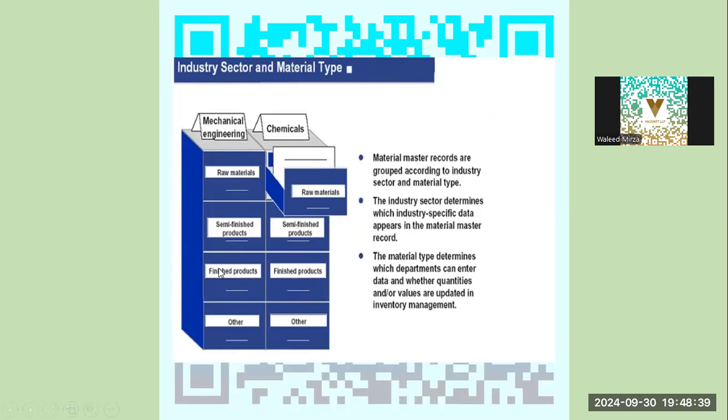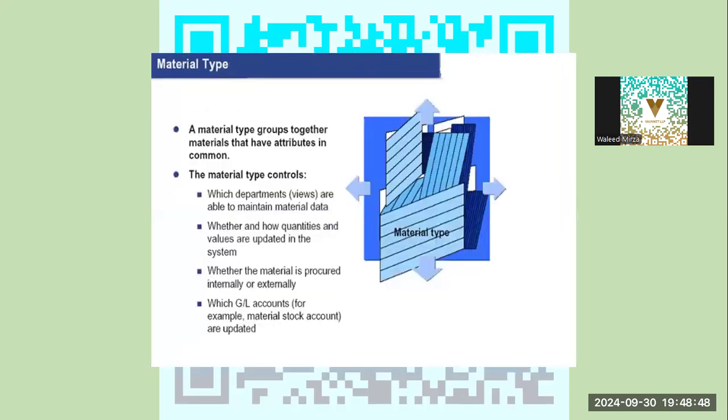Within industry sector we have material types like raw materials, semi-finished goods, and finished goods. Others are basically services, design, or documentation. Material types have features that are common to materials that relate to this material type.